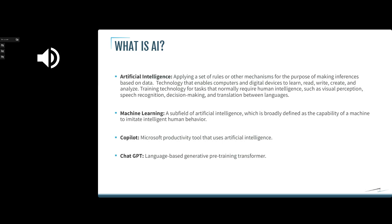AI is also about training technology for tasks that normally require human intelligence, such as visual perception, speech recognition, decision making, and translation. Things like language translation — typing a word and getting it back in another language — or face ID on your iPhone, or speech recognition that's been around forever, are all forms of artificial intelligence. Some of it has been around for a long time; it's definitely getting more complex and layered.